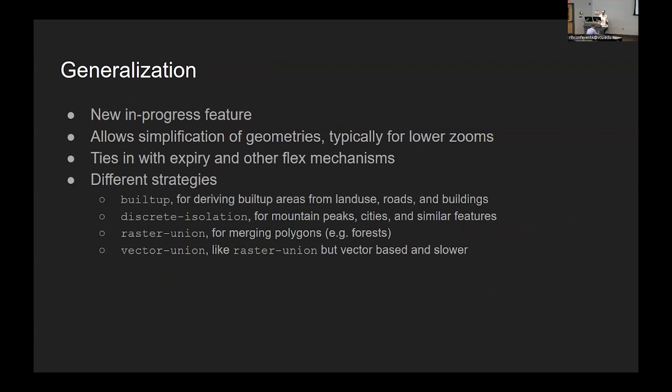There's also a new feature called generalization. This works with flex and allows simplification of geometries, typically for lower zooms. It can do stuff like derive built-up areas, which is traditionally a tricky thing to do from OpenStreetMap data. It can do discrete isolation, so if you have mountain peaks, finding the most prominent mountain peaks in an area so that you only see the big peaks, not all of the little peaks that might be just a few yards away from the main peak. This can also work with cities.